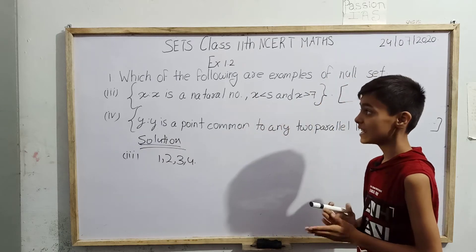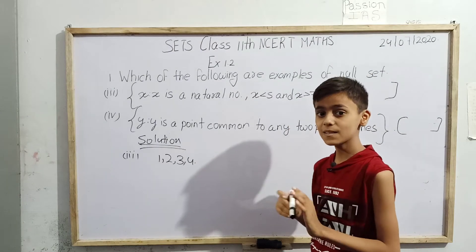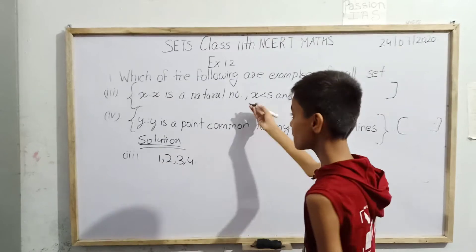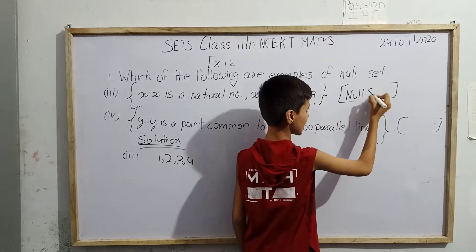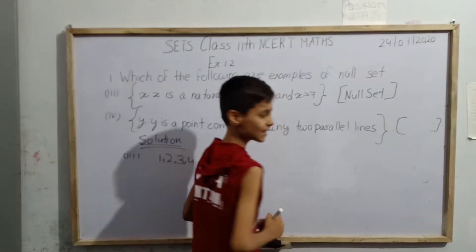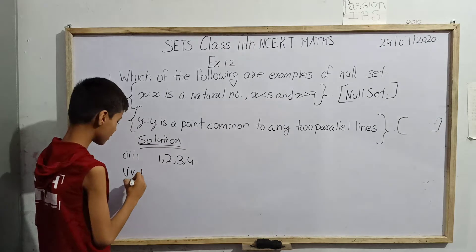In which they are natural numbers and x is less than 5 and greater than 7. It means that in this set no element exists, and if it is such, it means it is a null set. By this we get that third is actually an example of null set.